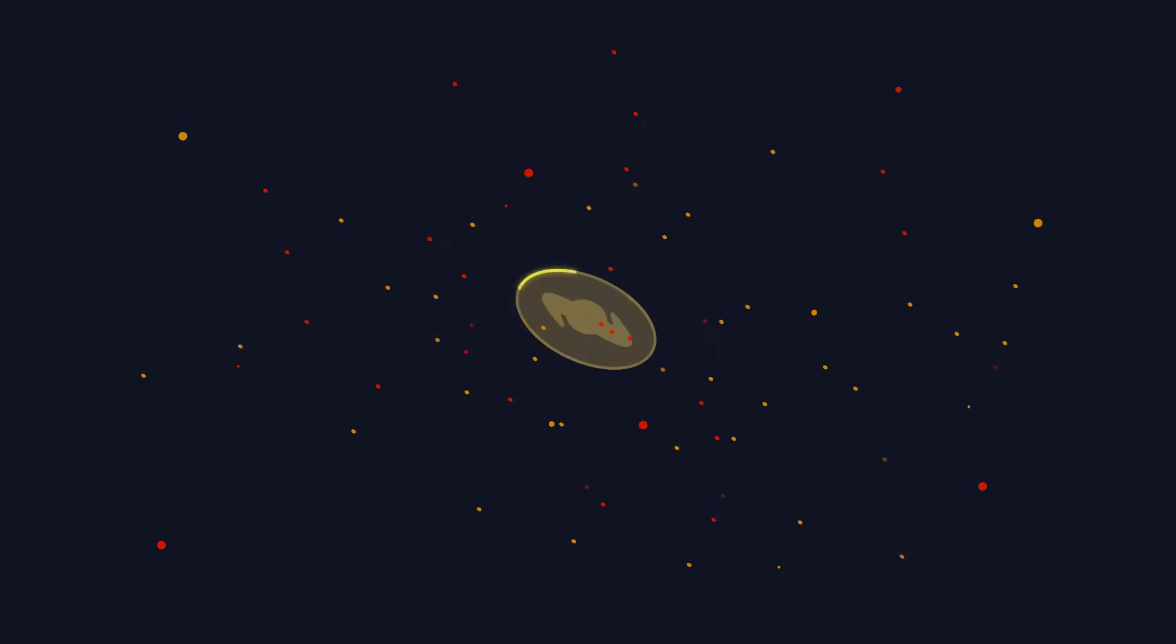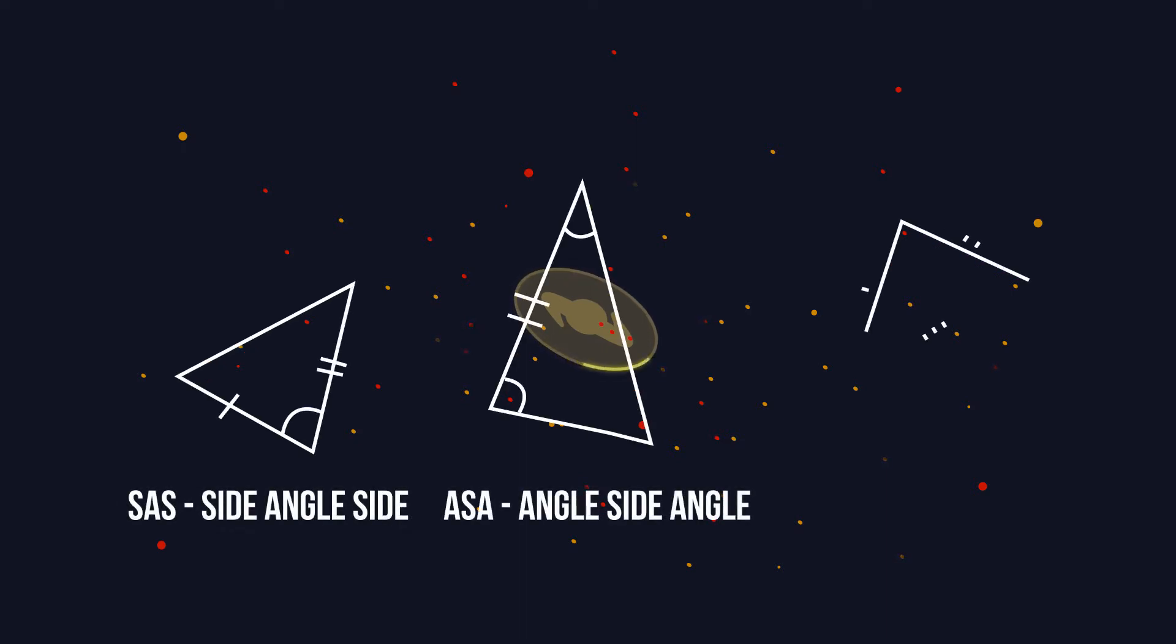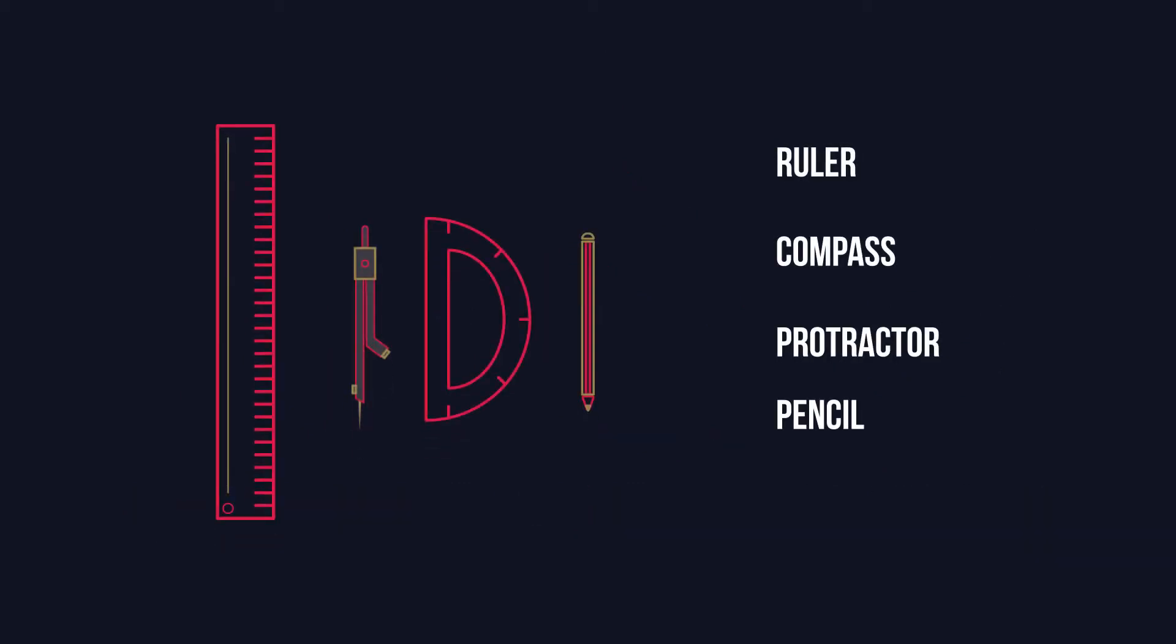You need to have three properties to construct a triangle. These could be side, angle, side, angle, side, angle or all three sides. You'll need a ruler, compass, protractor and pencil.